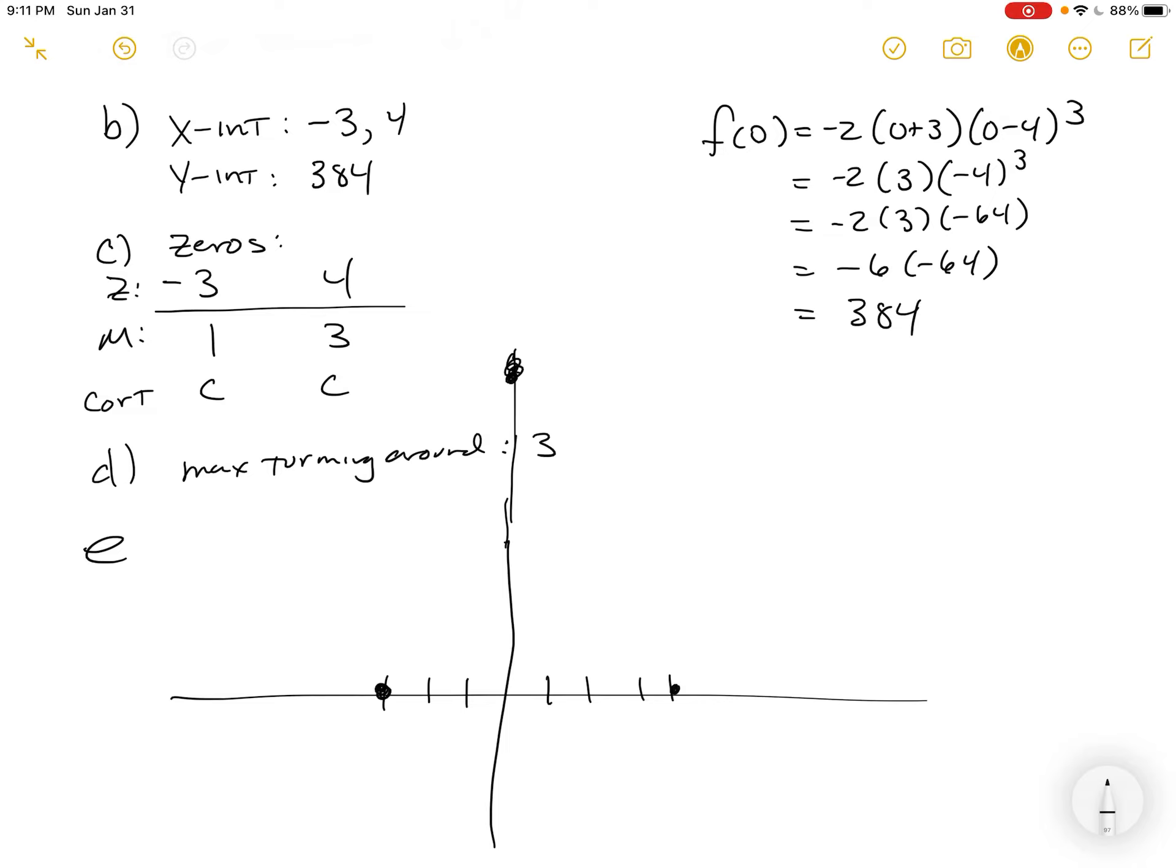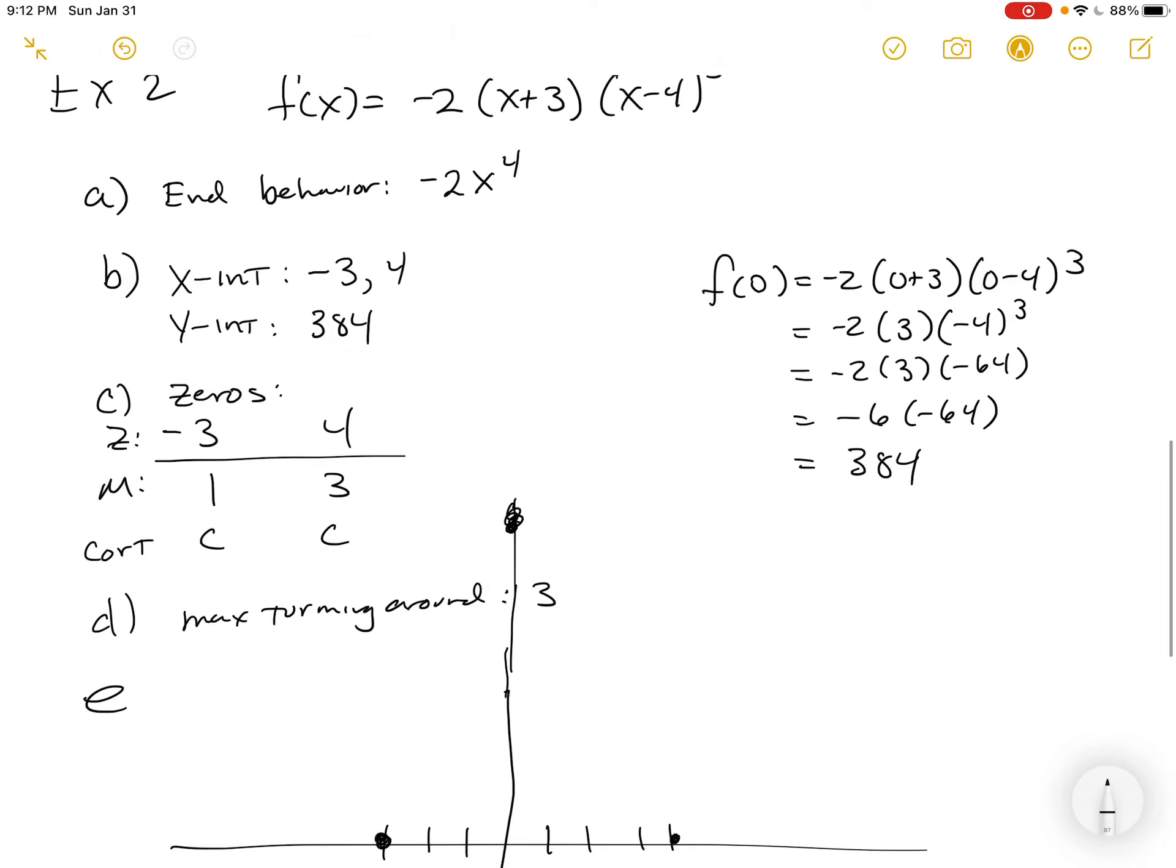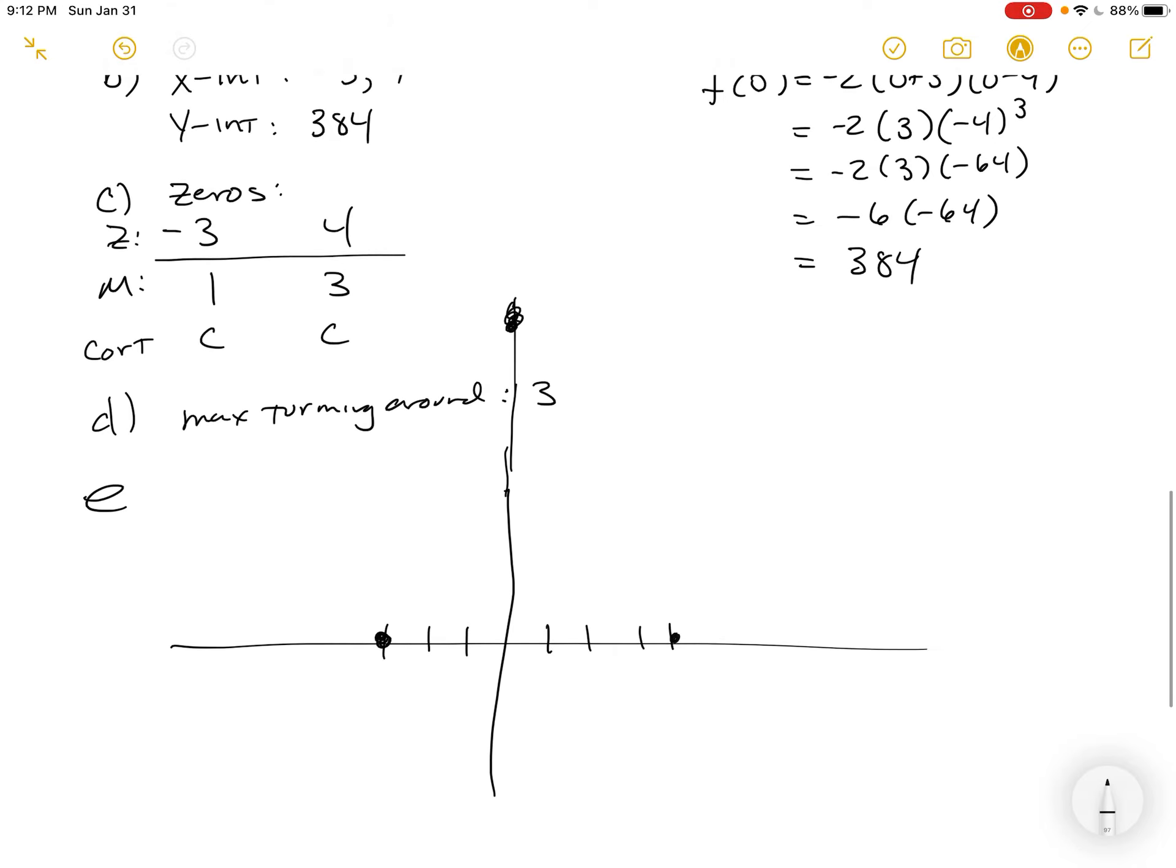Now, what does it behave like? It behaves like negative 2x to the 4th. So, we know it starts low and comes up through this point. And we know it comes really high. That doesn't even have to be its crux point. And then turns and comes down through this point. So, it only turns around once and then goes like that.